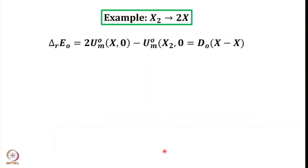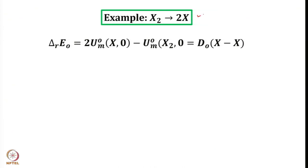That derivation is straightforward. Now, for dissociation reactions like this, delta_r E naught equals twice the internal energy of X at absolute zero minus the internal energy of X₂ at absolute zero. This is simply the dissociation energy at absolute zero of the X–X bond. So instead of writing delta E naught, we can write D₀, the dissociation energy of the X–X bond at absolute zero.